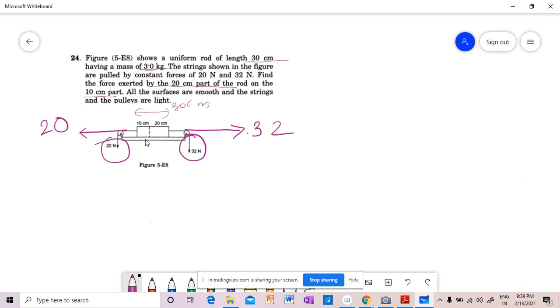Mass कितना है? 3 kg है। अब acceleration निकालेंगे। The 32 minus 20, that means net force is 32 minus 20 = 12, divided by total mass. This whole system's mass is 3 kg, so divided by 3 kg, that is equal to 4 meter per second square acceleration.